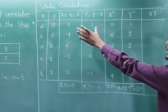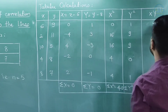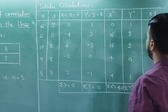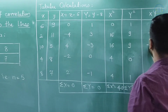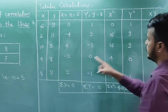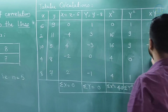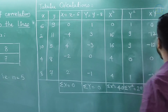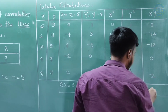Now XY calculations: 0 times 1 is 0, minus 4 times 3 is minus 12, 4 times minus 3 is minus 12, minus 2 times 0 is 0, 2 times minus 1 is minus 2. So summation XY is minus 24 minus 2, that is minus 26.